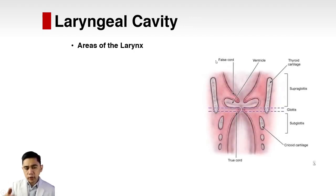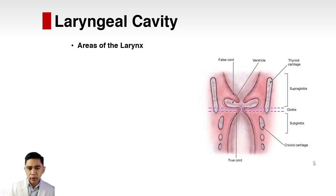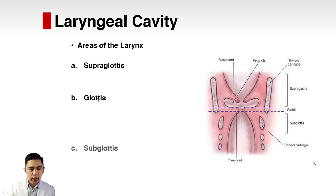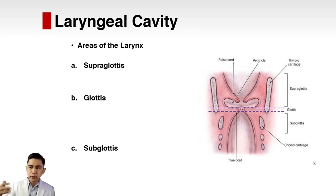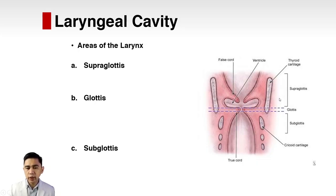Now let's talk about the laryngeal cavity. If you cut the larynx, you see soft tissue and the passageway of air — the laryngeal cavity. The laryngeal cavity is divided into three areas: the supraglottis, the glottis, and the subglottis. The glottic area is where the vocal folds are found; above it is the supraglottis, and below is the subglottis.